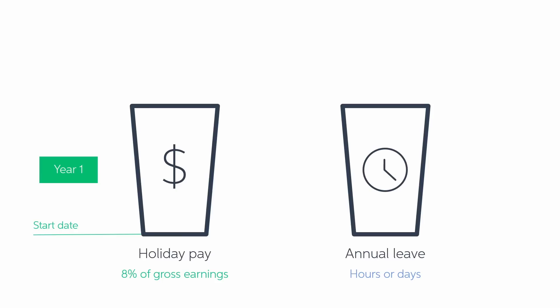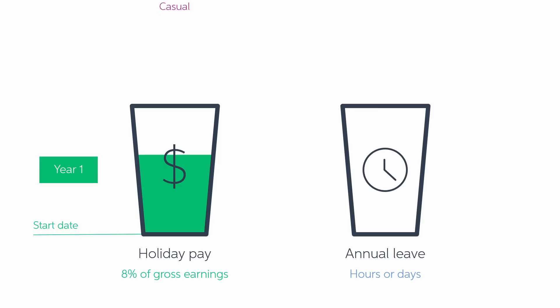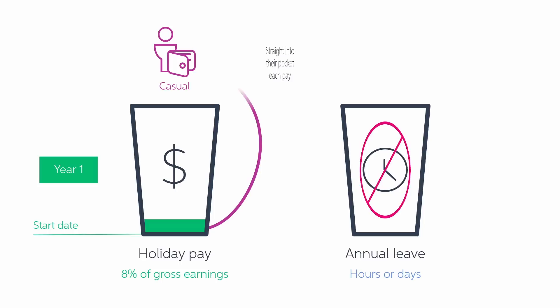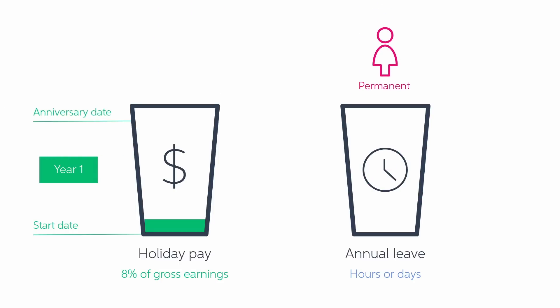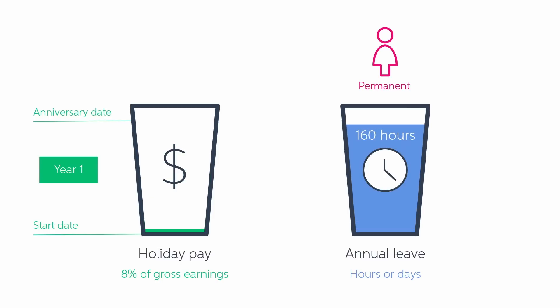Let's start with holiday pay. Holiday pay is the leave entitlement that employees accrue as they work — this is usually 8% of their gross pay. If you're a casual worker, this 8% is usually paid out as you go each pay, so it doesn't accumulate. Permanent or fixed term staff, whether part-time or full-time, build this up throughout the year and it's held in a dollar value. After 12 months of continuous employment, these staff become entitled to their annual leave, and their holiday pay accrual resets to zero.